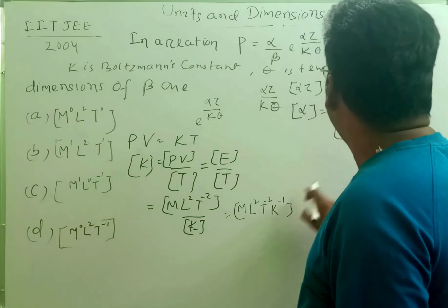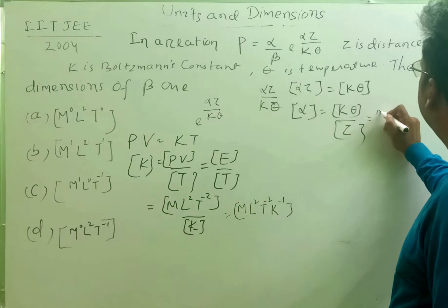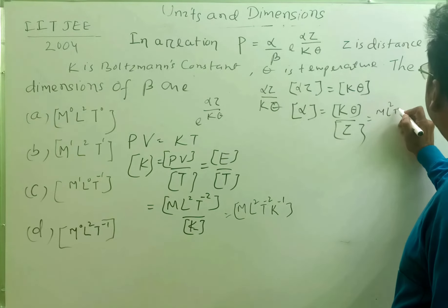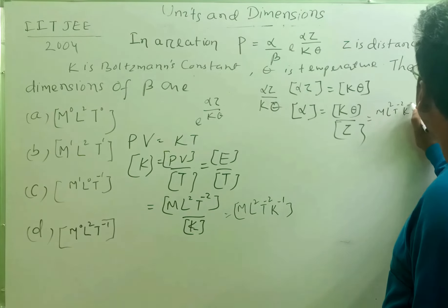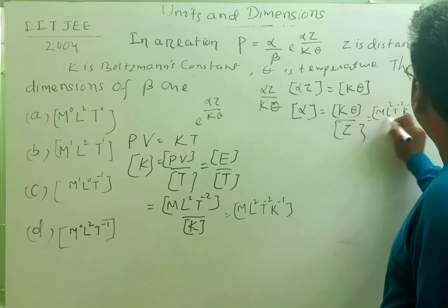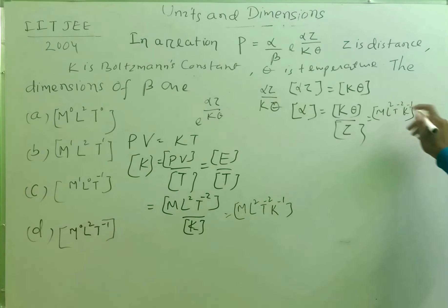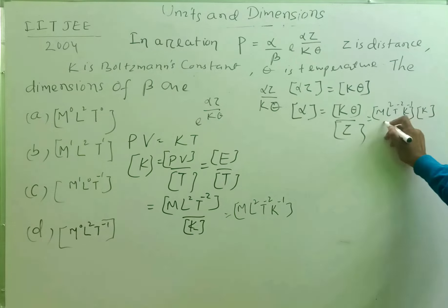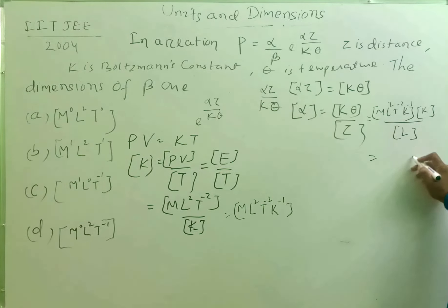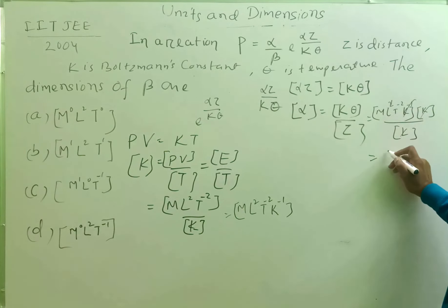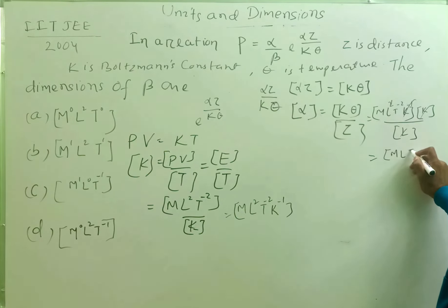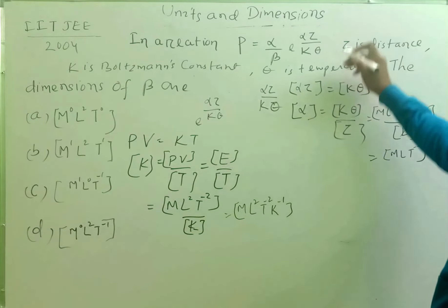So the dimensional formula for k is ML²T⁻²K⁻¹. The dimension of theta (temperature) is K, and z (resistance/length) has dimension L. The K⁻¹ from k and K from theta cancel each other. So the dimensions of alpha become ML²T⁻²K⁻¹ × K divided by L, which gives MLT⁻². This is the dimensions of alpha.